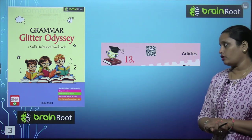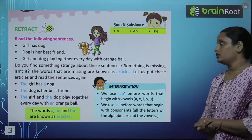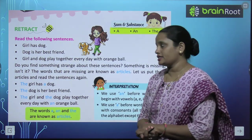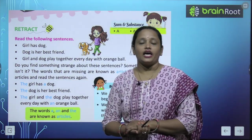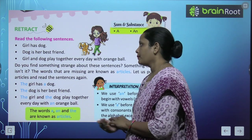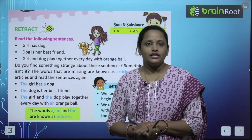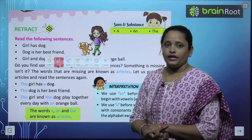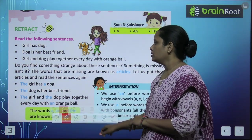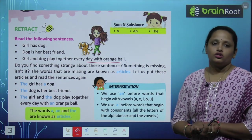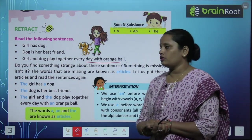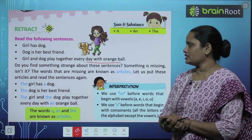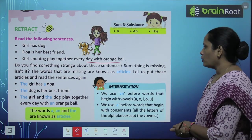As you have already learnt about 'a' and 'the', articles are 'a' and 'the'. Now let's read the following sentences: 'Girl has dog' — girl ke paas dog hai. 'Dog is her best friend' — dog uska best friend hai. 'Girl and dog play together everyday with orange ball' — so girl aur dog apne orange ball ke saath roz khilte.